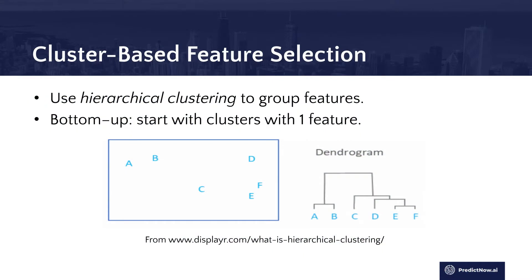In hierarchical clustering, we start from the bottom up. When you have a whole pool of features — say 500 features — the first step is to group them into small clusters, maybe two or three features in one cluster. Then at the next level you group that two-feature cluster into a bigger cluster. At some level you stop, and at that point you have big clusters and smaller clusters, where each cluster contains features that are very similar to each other.